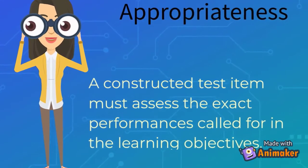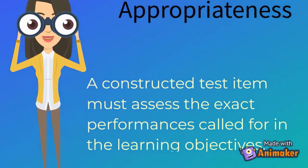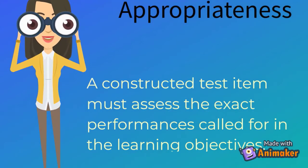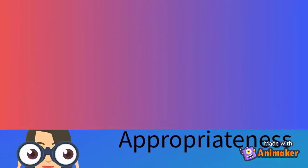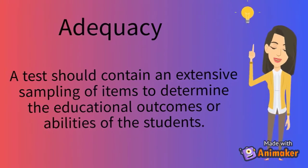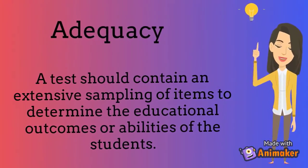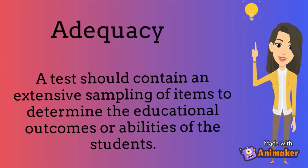Appropriateness: it must be noted that the constructed test item assesses the exact performance called for in the learning objectives. Next, we have adequacy. A test should contain an extensive sampling of items to determine the educational outcomes or abilities of the students.